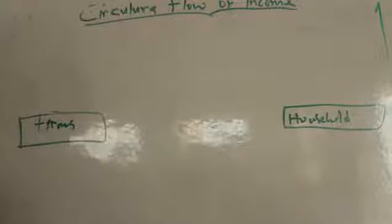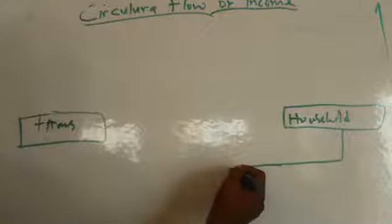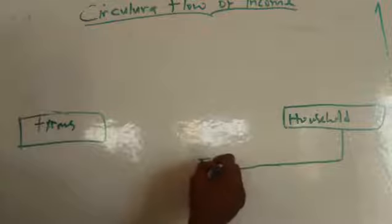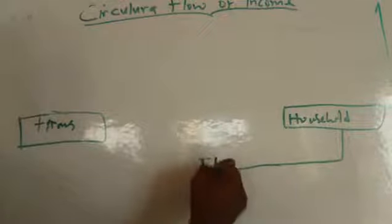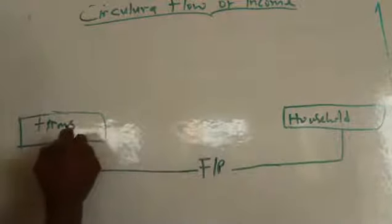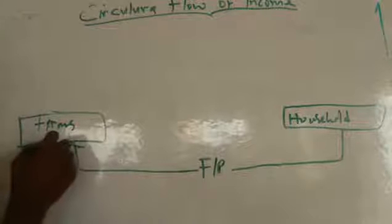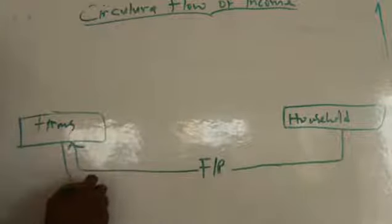Let's start from our normal household, as in the two sector model. The supply will come from the household first — that is, factors of production. Factors of production flow to the firms, and firms will pay back for the use of those factors of production.